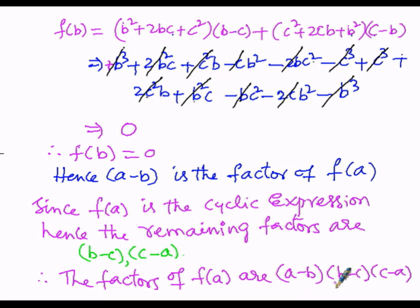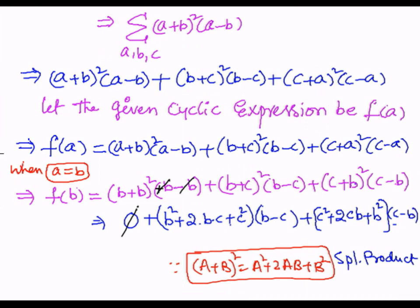The degree of (a - b)(b - c)(c - a): the first term is a·b·c, which is a^1 · b^1 · c^1, so the degree is 1 + 1 + 1 = 3. Similarly, the given cyclic expression f(a) is also of third degree, because in (a + b)^2 · (a - b), the first term is a^2 · a = a^3, which is third degree.